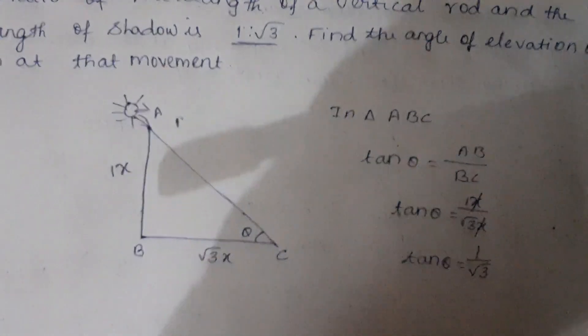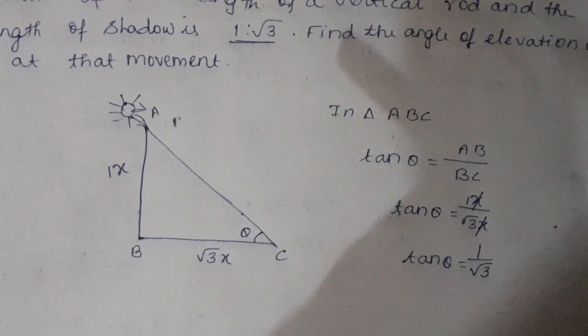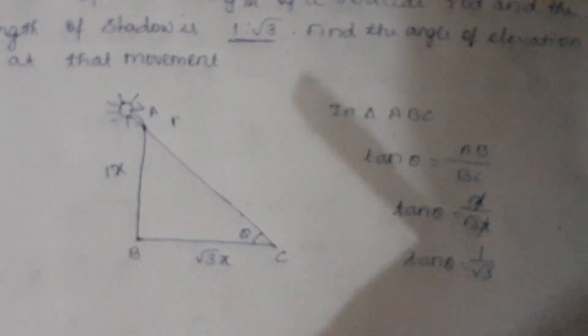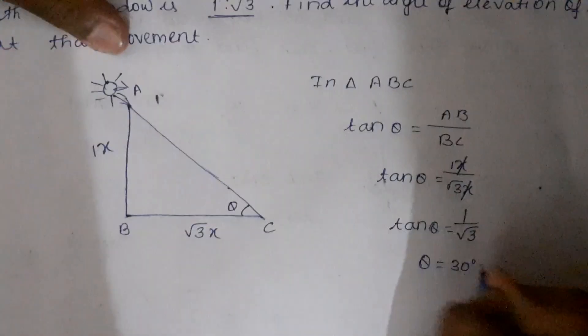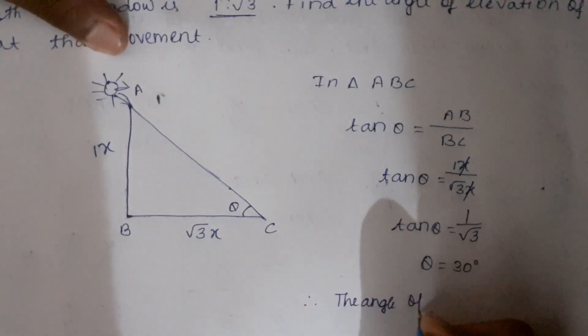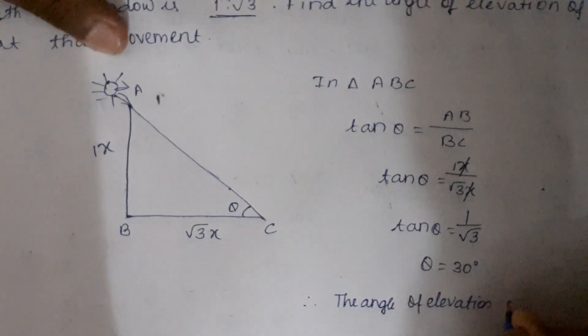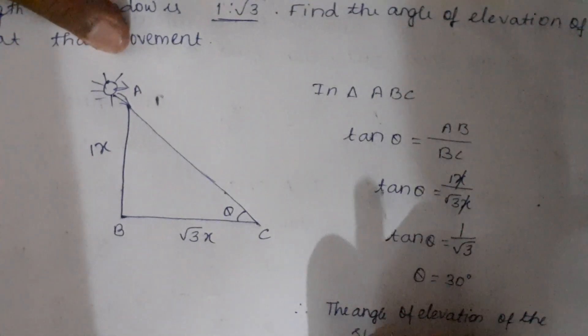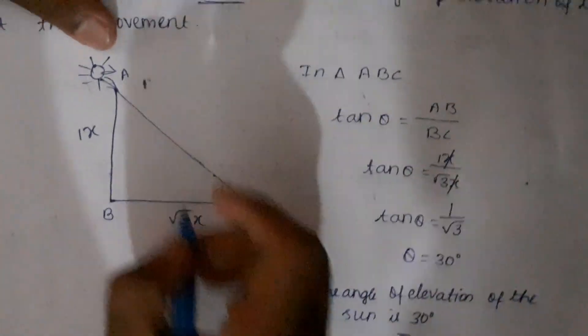For what value of tan theta would you get 1 by root 3? You would get 1 by root 3 for 30 degrees. So theta would be 30 degrees. Therefore, the angle of elevation of the sun is 30 degrees.